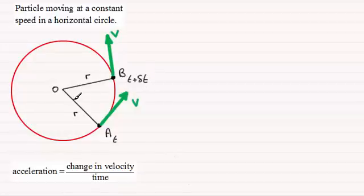And during that time the particle would have travelled an angle, a very small angle which we'll call delta theta. And that will be measured in radians.